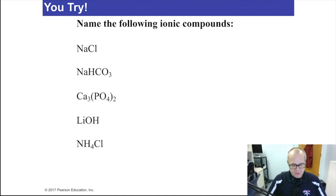Pause the video here. You give this a try. You name all five ionic compounds. Some of them are a little challenging. They have polyatomics in them. You're going to have to use a polyatomic chart. Pause the video, get the chart out, and figure these out. Come back when you're done.